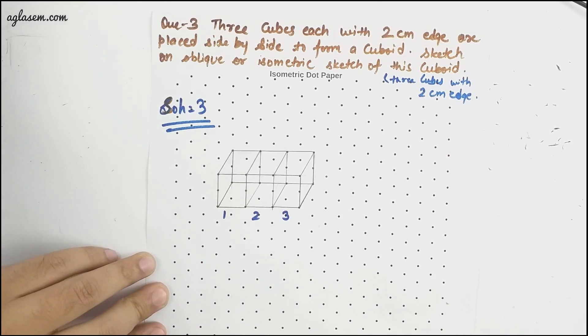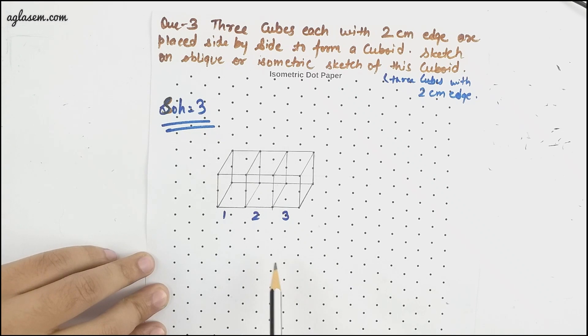Coming to question number three. Three cubes each with 2 cm edge are placed side by side to form a cuboid. Sketch an oblique or the isometric sketch of this cuboid. Now when we place three cubes together it's obviously a cuboid. So this is how it will look like the cube when formed together.